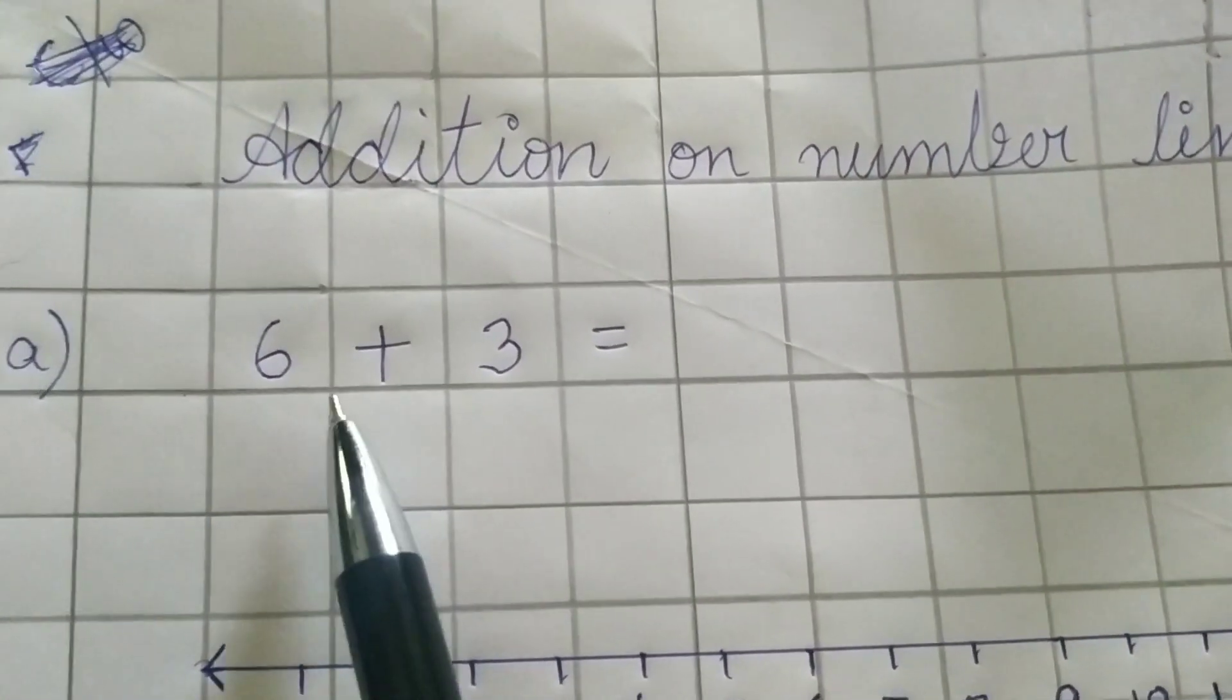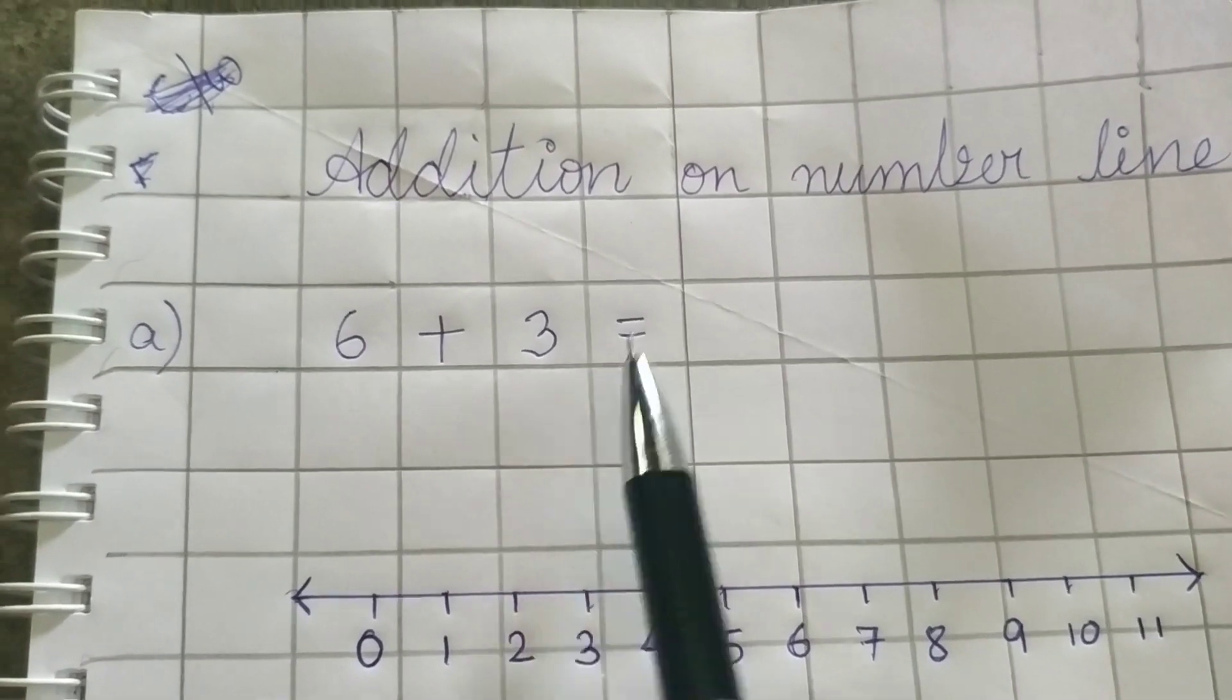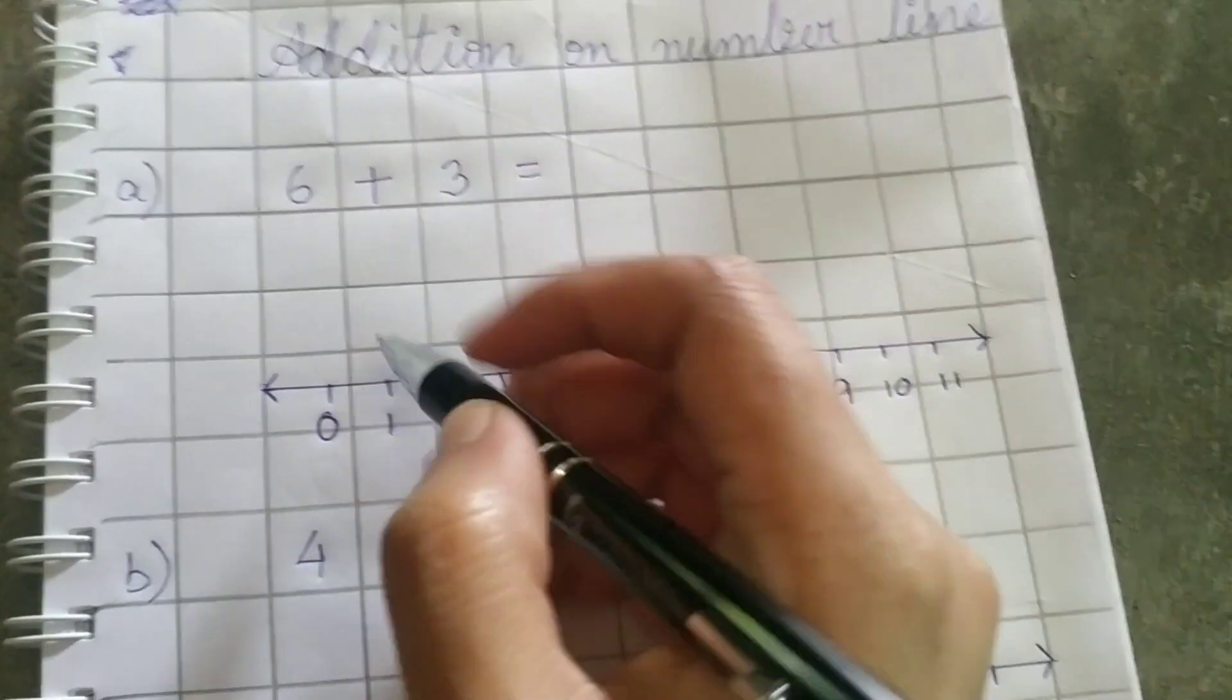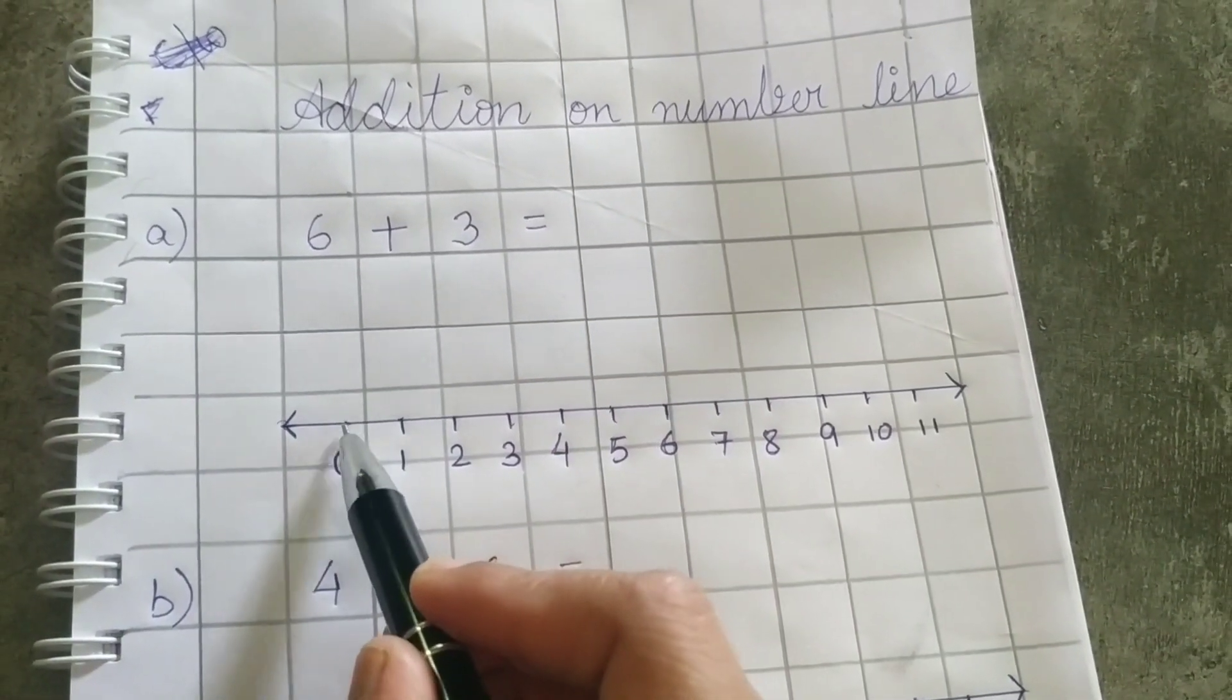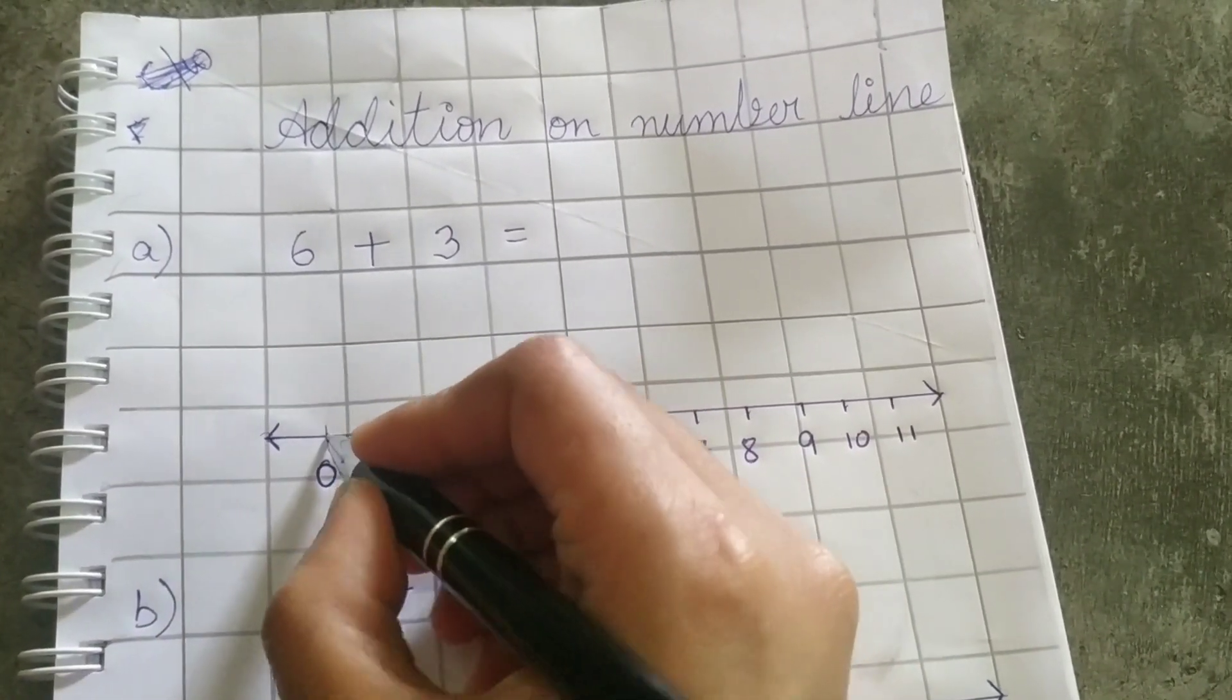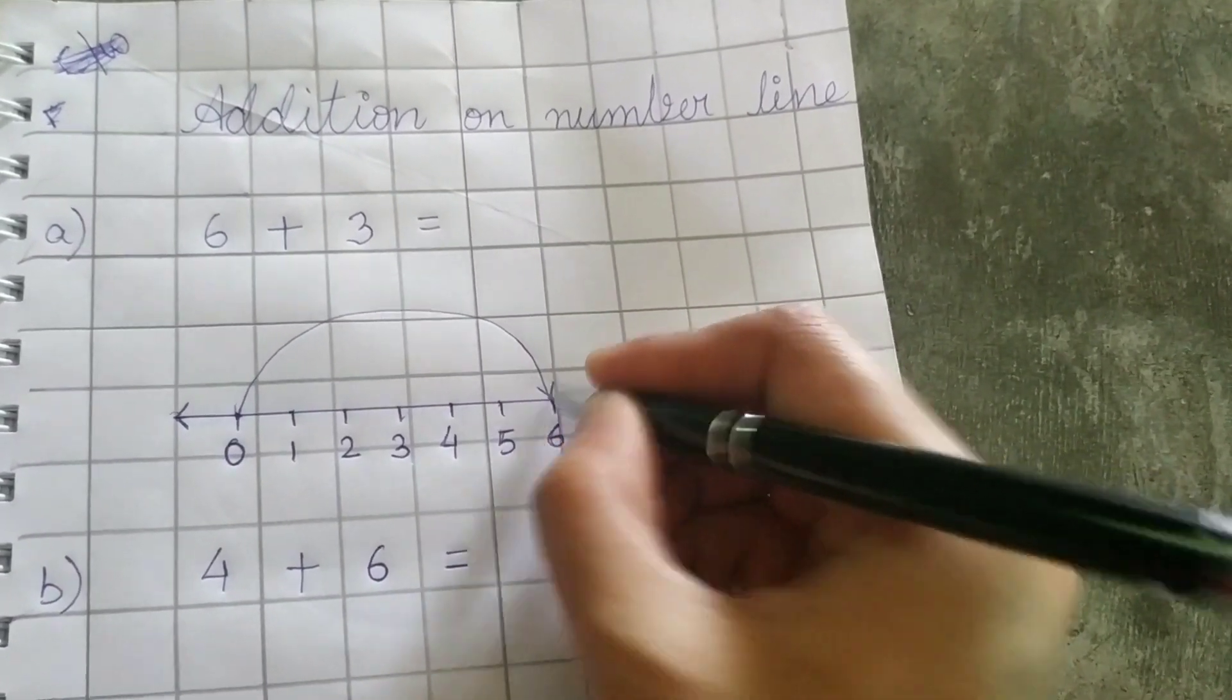So first is 6 plus 3. What it is? 6 plus 3 equals to? We don't know. So let's start. We have to start it with 0. Number line always started with 0. So first number is 6. We have to jump 0 to 6. So keep the pencil here. 0 to 6. Correct.